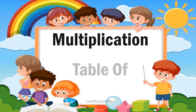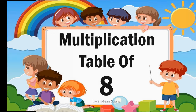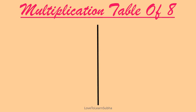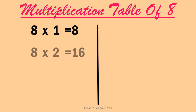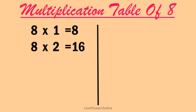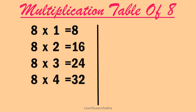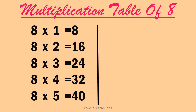Multiplication table of 8. 8 ones are 8, 8 twos are 16, 8 threes are 24, 8 fours are 32, 8 fives are 40, 8 sixes are 48.